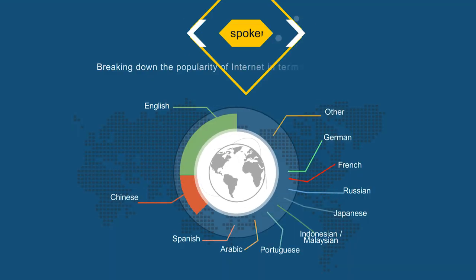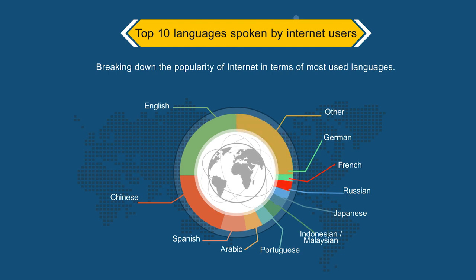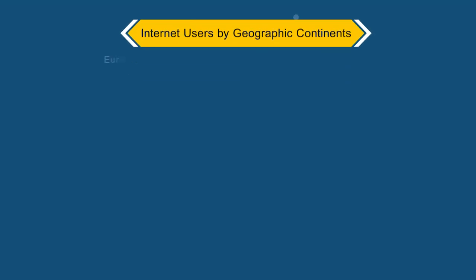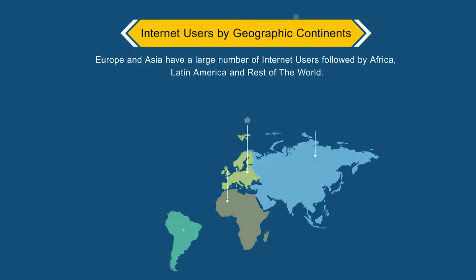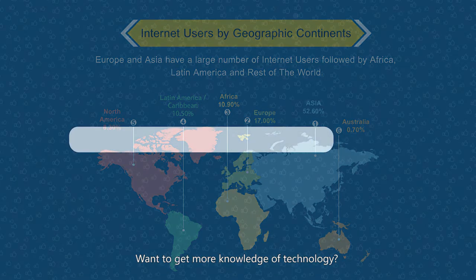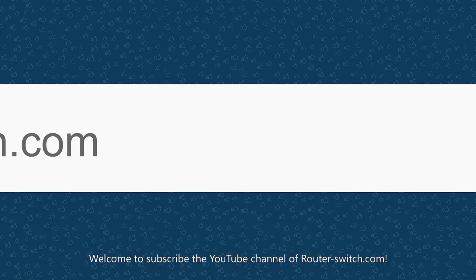Today, at least 62.0% of the global population has internet connectivity. Breaking down the popularity of the internet in terms of most used languages, Europe and Asia have the largest number of internet users, followed by Africa, Latin America, and the rest of the world.